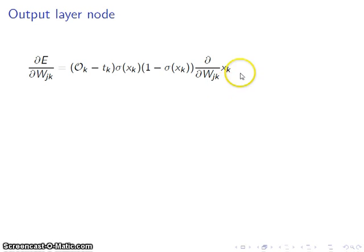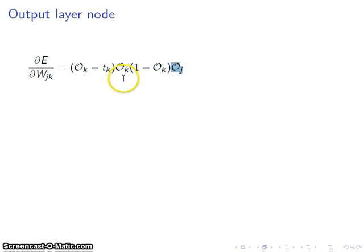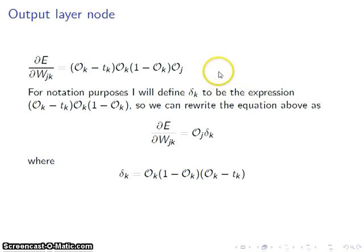So let's look at the derivative with respect to the weight from j to k of x sub k. Now x sub k is just the output of the jth node times the weight from j to k. So the derivative with respect to the weight from j to k of that product is simply the output of j. And sigma evaluated at its input is just the output of the node, so I'm going to simplify accordingly. For notation purposes, I will define delta sub k to be the collection of all the terms involving the subscript k, which is output of k minus target value of k times output of k times 1 minus output of k — which is really just the derivative of the transfer function.